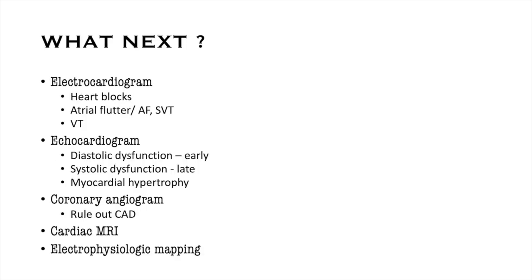Once a patient is suspected of having infiltrative cardiomyopathy, what is the next logical step? There are a battery of investigations available. ECG can identify heart blocks, atrial fibrillation, and ventricular tachycardia. Echocardiogram shows diastolic dysfunction early in the disease, progressing to systolic dysfunction with reduced ejection fraction later on, and also picks up myocardial hypertrophy. Coronary angiogram is often done when the patient has an ACS-like acute presentation. Cardiac MR is the investigation of choice for characterization of the myocardium, while electrophysiologic mapping is used for treatment planning.